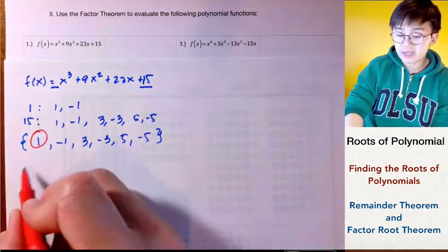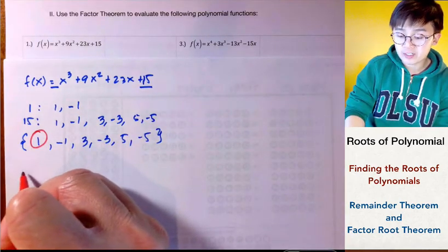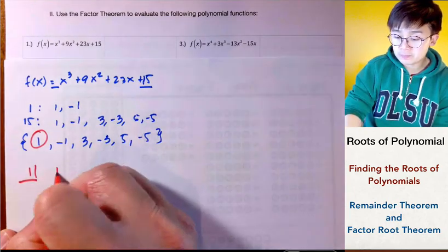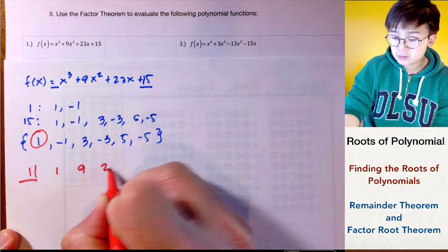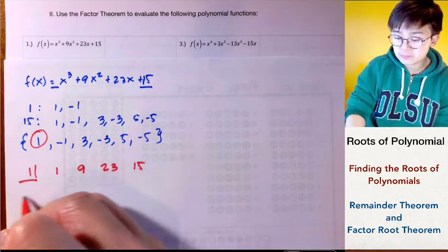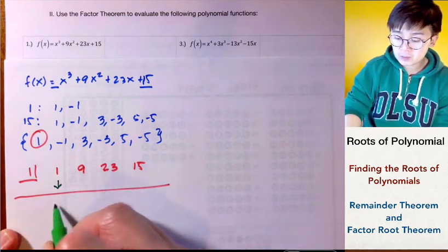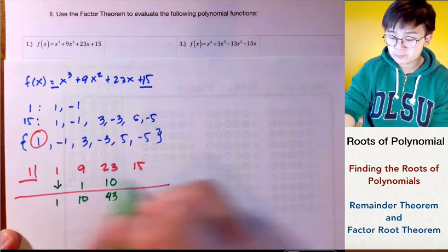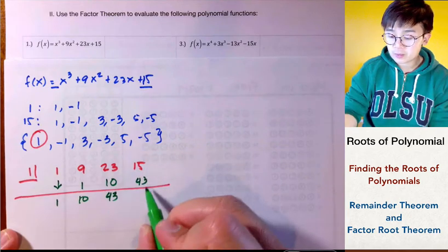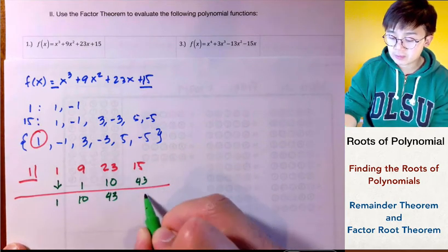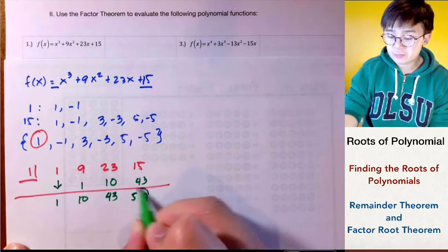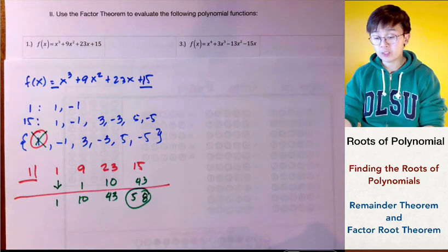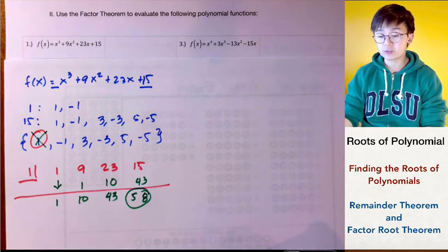Let's see if negative 1 gives a remainder of 0. Our coefficients are 1, 9, 23, and 15. Using synthetic division with 1 as the divisor, we get 1, 10, 43, and 43 plus 15 is 58, which means 1 is not a solution because the remainder is 58.